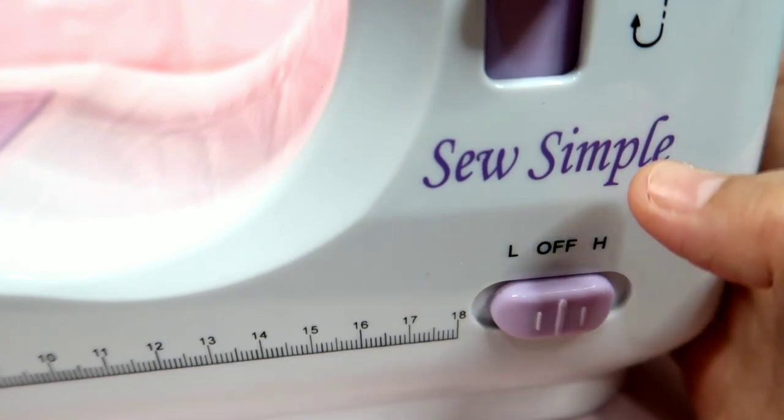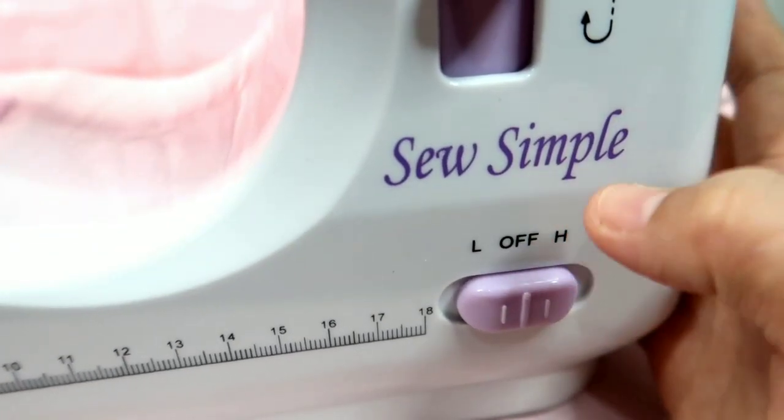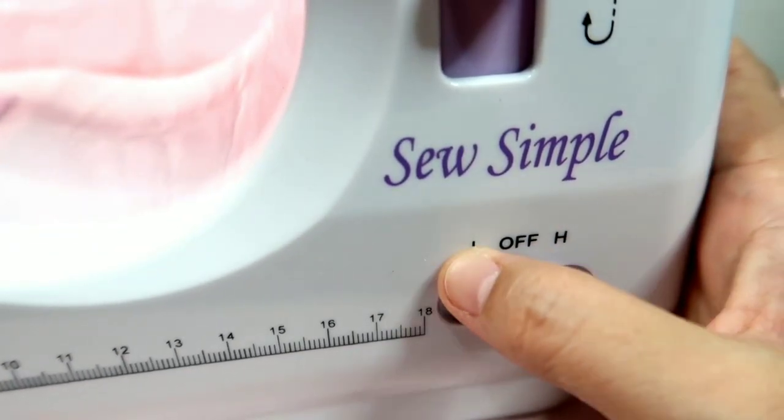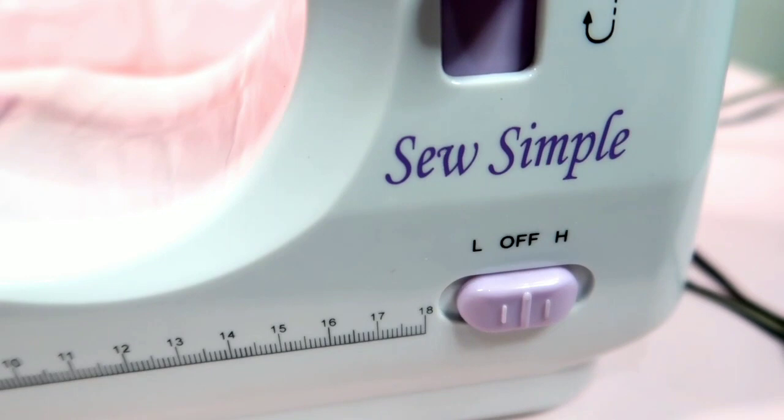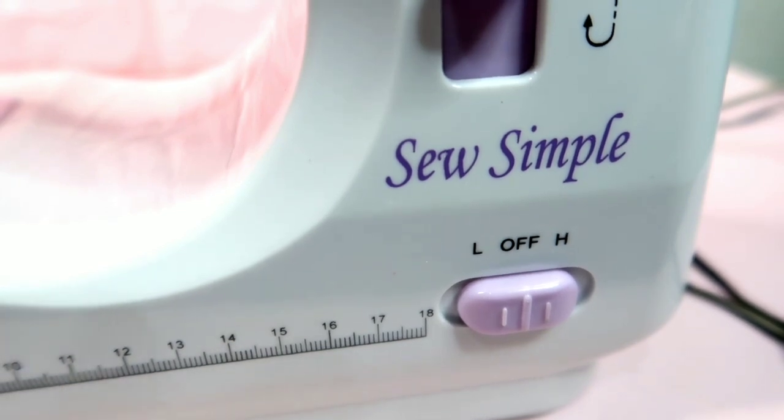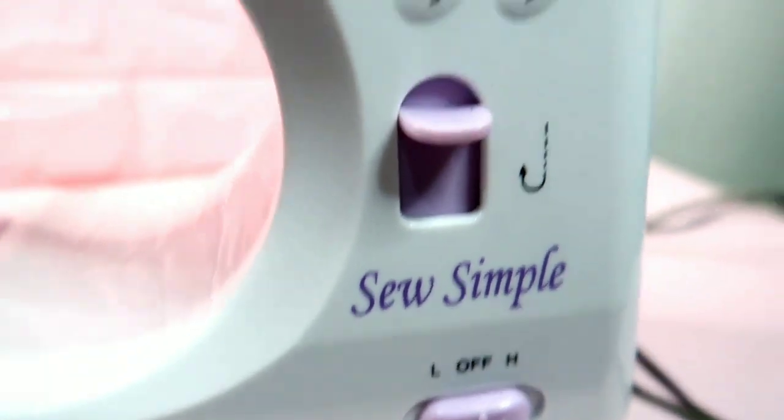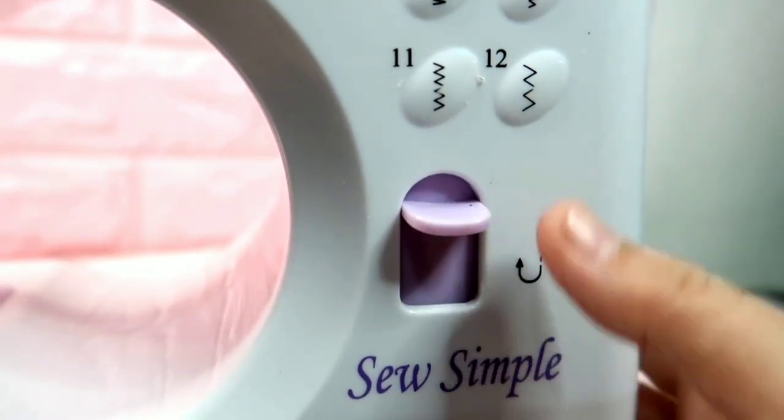If you don't use it and it's on off like this, the foot pedal will work. You press if you want it to run. If you don't want to use the foot pedal, you can use low for slower running, or high for faster. Usually, since I learned on a vintage sewing machine, I'm not very good with high speed.